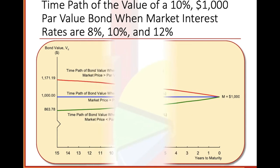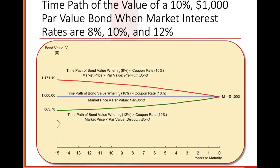The time path shows the value of a 10%, $1,000 par value bond when market interest rates are 8%, 10%, and 12%. The 12% line is at a discount, the 10% line is at par, and the 8% line is at a premium. As the bond gets closer to maturity, it approaches $1,000. Keep in mind, in our earlier example we paid $875.